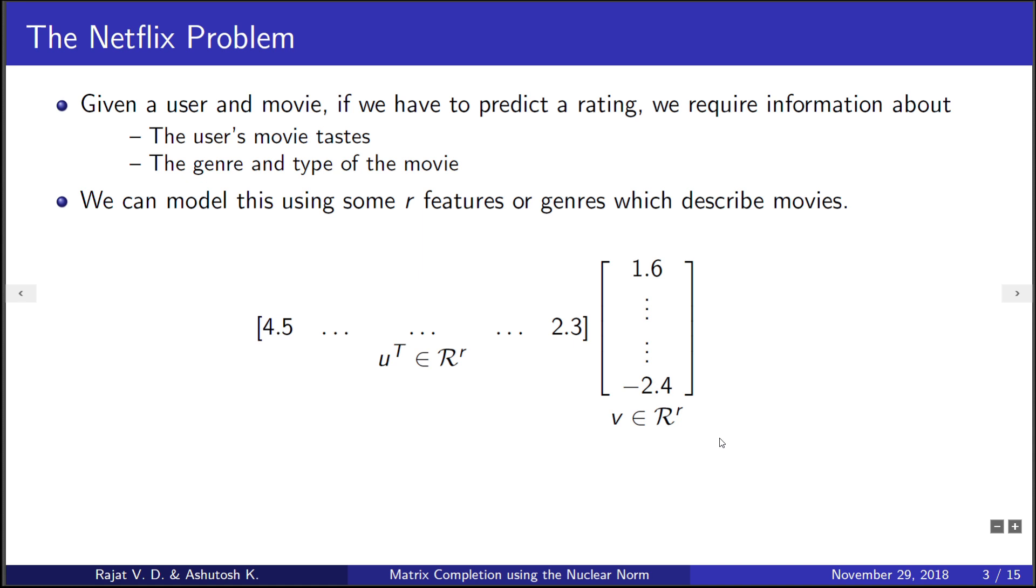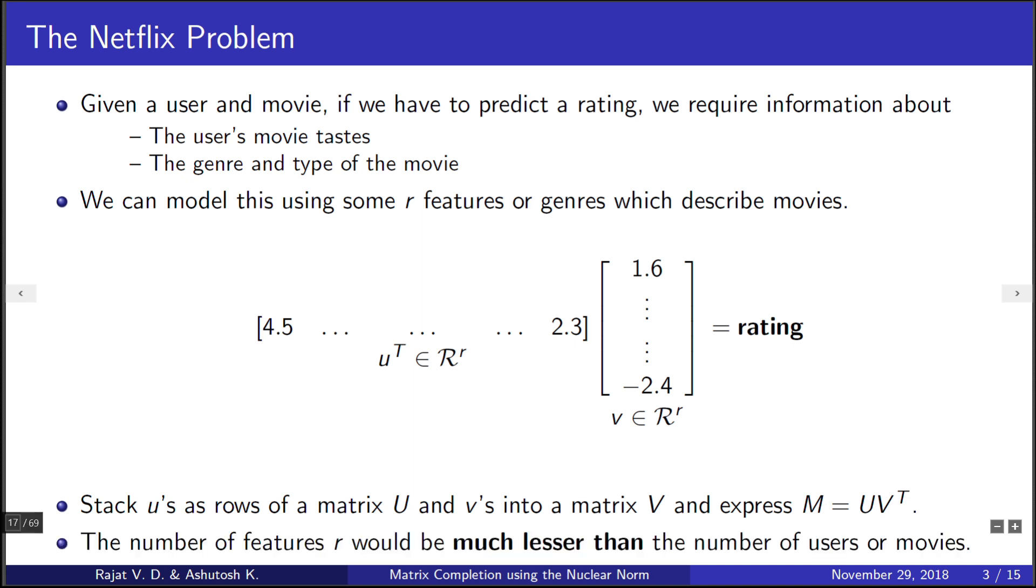To predict the rating, we just take the dot product. Now we can stack the u vectors and v vectors into matrices capital U and V and express our whole rating matrix M as UV transpose. Now the key point is that the number of features or genres r would be much lesser than the number of users or movies. This would mean that M has a low rank.